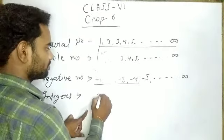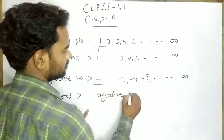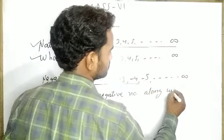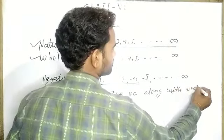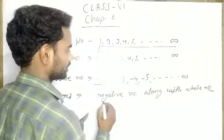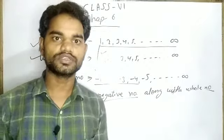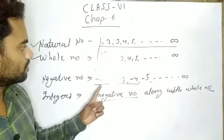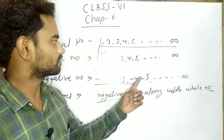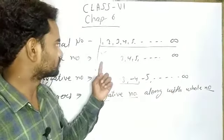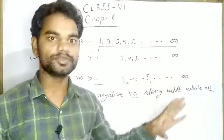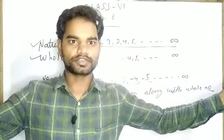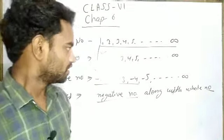All the negative numbers along with whole numbers are known as integers. The integers are: minus 1, minus 2, minus 3, minus 4, minus 5 and so on, then 0, 1, 2, 3, 4, 5, 6, 7, 8, 9, 10. These numbers go in the positive direction and in the negative direction, with 0 in the middle. These numbers can be represented on the number line.